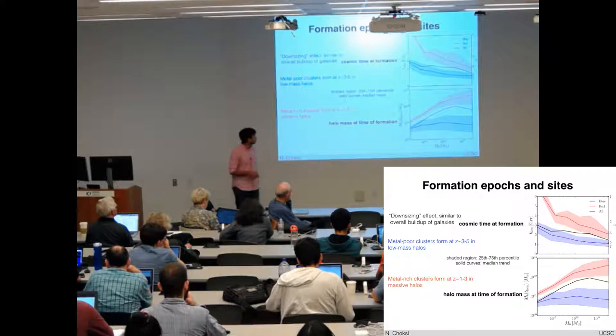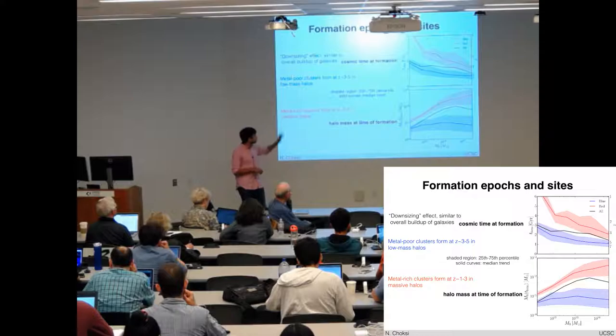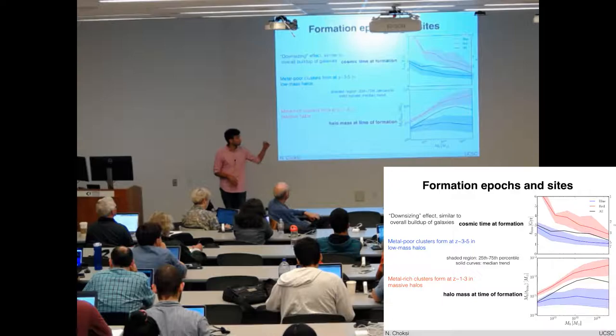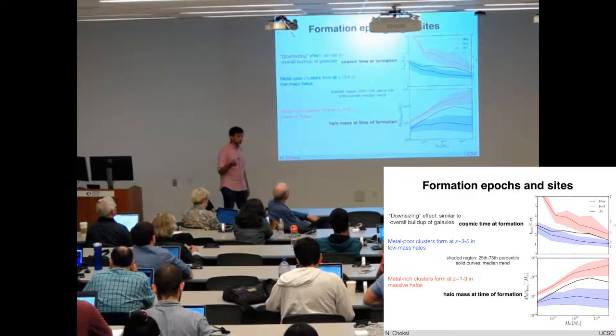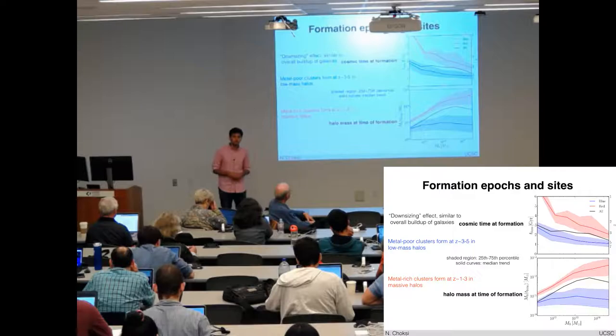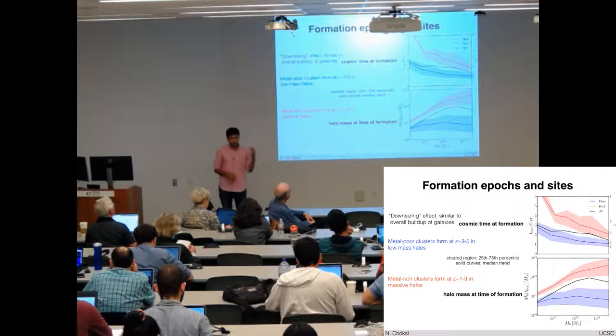I hope I've convinced you that this is a reasonable and interesting model. Now let's look at where and when globulars are forming. The upper panel here is the cosmic time at which they're forming. And the lower panel is the halo mass in which they're forming. And I've split into the metal rich and the metal poor clusters. The first thing to point out is that in massive galaxies, globular cluster formation is pushed to higher and higher redshift. This is similar to what we see for the overall buildup of the field stars. We know more massive galaxies have older stellar populations.